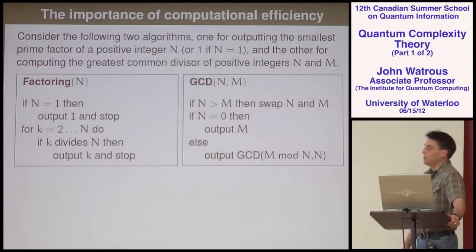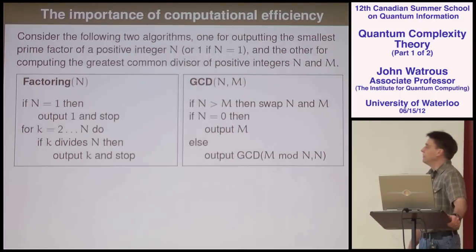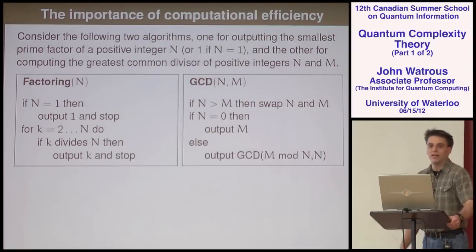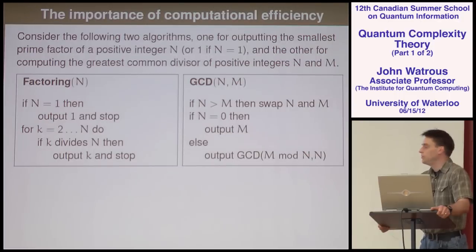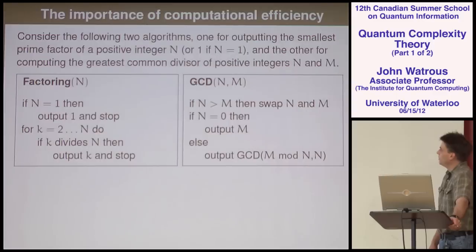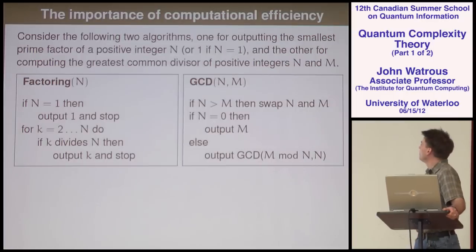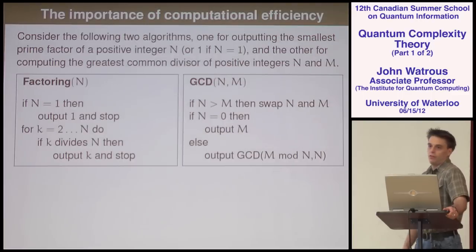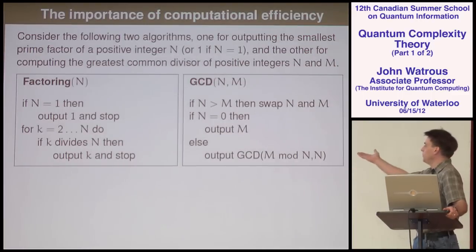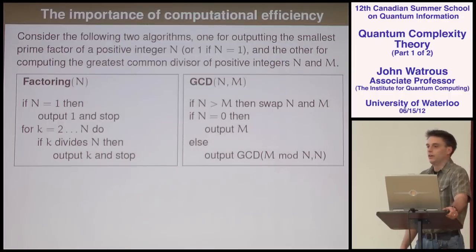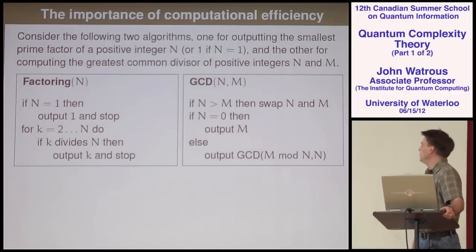The second algorithm is for computing GCDs — maybe you've seen it before. It's arguably the oldest algorithm currently in use: Euclid's algorithm, discovered more than 2,000 years ago. It takes two integers N and M, assuming N is the smaller. If N is zero, output M. Otherwise, call the algorithm recursively with M mod N as the first argument and N as the second. This computes the greatest common divisor of N and M.